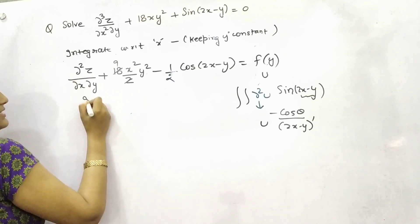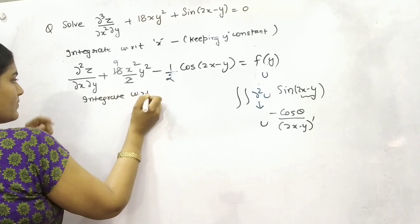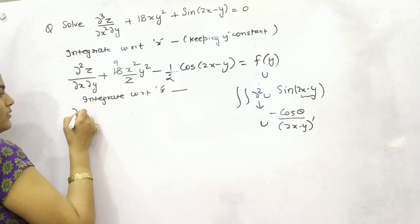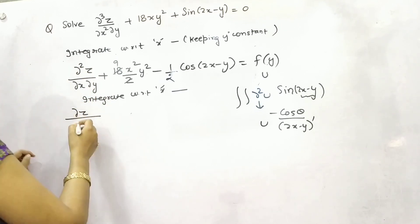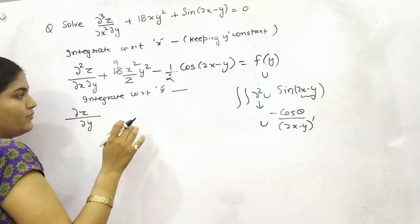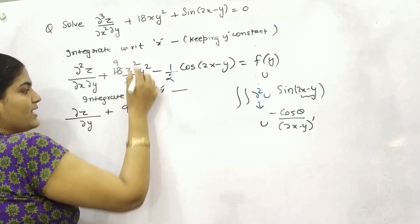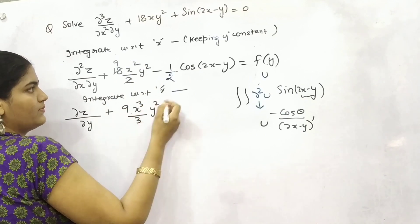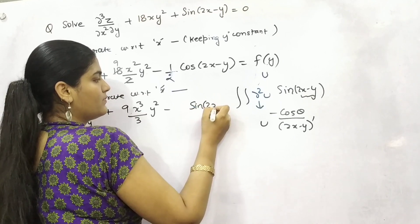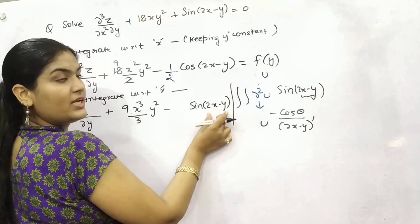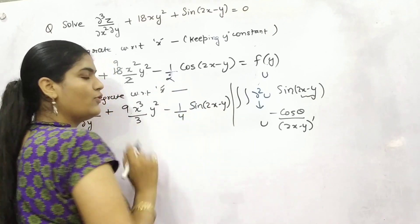Now, integrate again with respect to x. It will be reduced by 1 more — so completely removing the x partial differentiation operator. Integrate with respect to x: for the polynomial term, add one to the power and divide by the same, giving x³ divided by something. For cos(2x − y), the integral of cos(θ) is sin(θ), then differentiate θ with respect to x, giving 2, and divide by 2 — so 2 times 2 is 4 in the denominator.